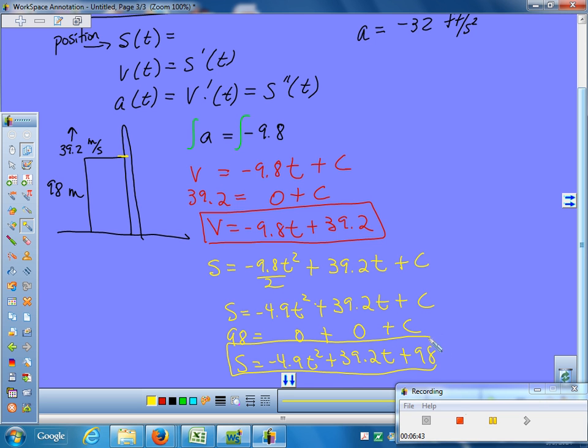So negative 4.9t² plus 39.2t plus 98. What we just derived is what you used to have to memorize. Half at squared plus vt plus s₀. That's the same old position equation. That assumes as long as I'm nice and I give you the values at the moment it started.